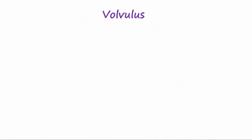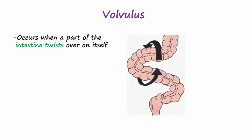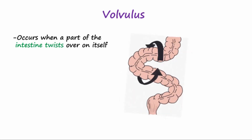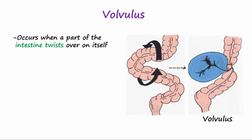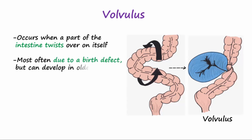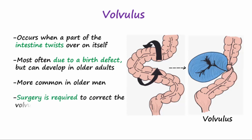A volvulus occurs when part of the intestine twists over on itself like a kink in a garden hose. It is most often due to a birth defect, but can also develop in older adults with constipation, and is more common in older men. Surgery is required to correct the volvulus and remove any possible dead tissue.